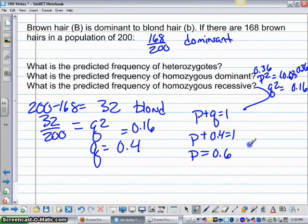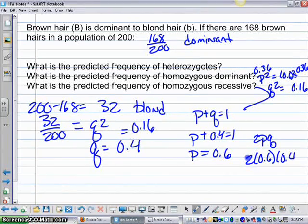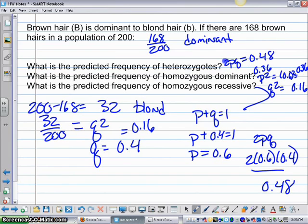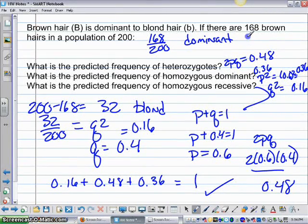And then what's the predicted frequency of heterozygous? So that's 2PQ. That's 2 times 0.6 times 0.4, which is going to equal 0.48. So that's 48%. 2PQ equals 0.48. And if you add all those up, 0.16 plus 0.48 plus 0.36, that should equal 1, which in fact it does. So that checks out.